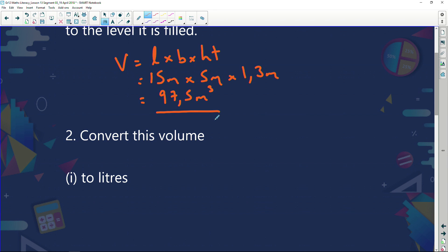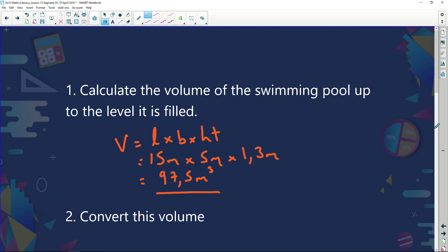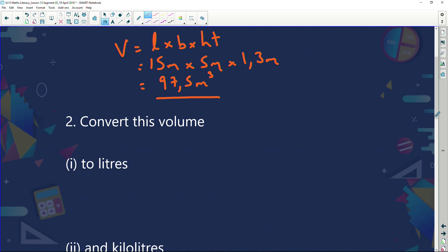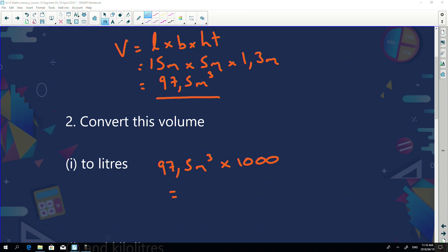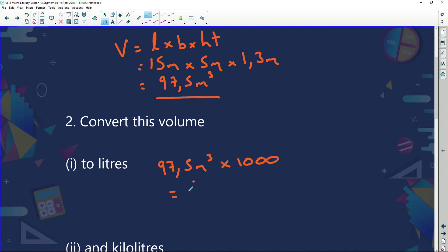Now we're taking it a step further. Convert this volume to liters. Do you remember, I told you we were given information and the information was that one meter cubed is a thousand liters. So if one meter cubed is a thousand liters, then I'm going to say, actually 97.5 meters cubed, we're multiplying that by a thousand. And that will give us how many liters we actually need. So 97.5, multiply that now by a thousand, and we get 97,500 liters.